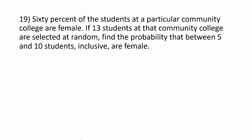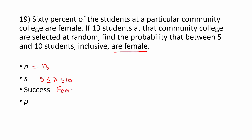Next problem: 60% of the students at a particular community college are female. If 13 students at that college are selected at random, find the probability that between 5 and 10 students are female. So another binomial problem — we're looking at the probability of selecting between 5 and 10 students out of 13. n is 13, and for x we're looking at 5 ≤ x ≤ 10. The success in this problem is being female, and 60% are female, so we'll use 0.6 for p.